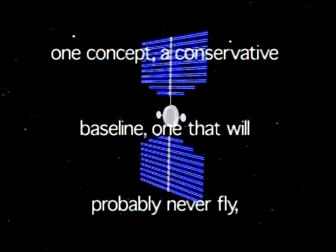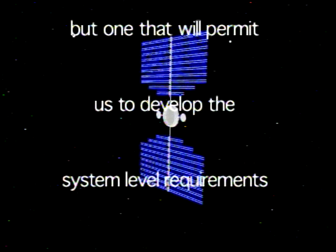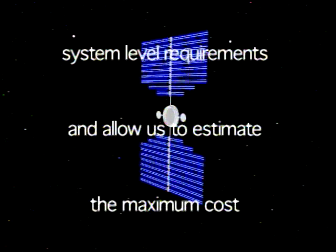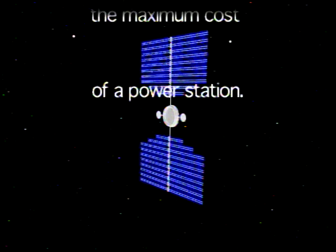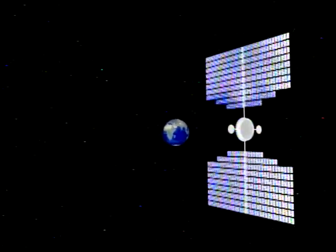Here is one concept, a conservative baseline, one that will probably never fly, but one that will permit us to develop the system level requirements and allow us to estimate the maximum cost of a power station. Each of the two solar array panels is ten square kilometers.